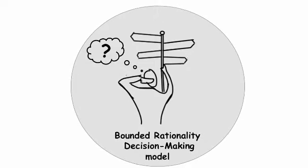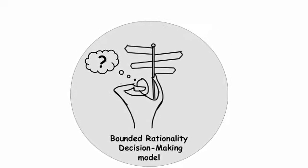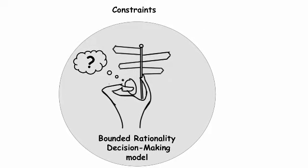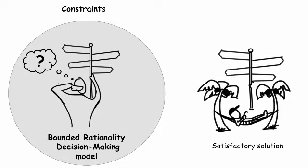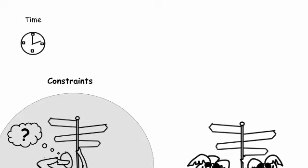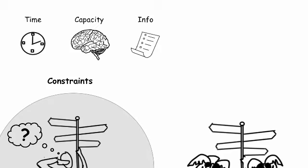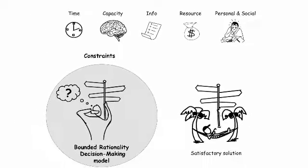The second model is bounded rational decision making. The bounded rationality model recognizes that there are all sorts of constraints that make it very difficult to maximize a solution. Therefore, people will come up with a satisfactory one as opposed to a perfect one, given the constraints they operate under. These constraints could be time constraints, mental capacity limitations, the availability of only limited information and resources, as well as personal and social constraints. Intuitive decision making represents a version of this bounded rationality model.